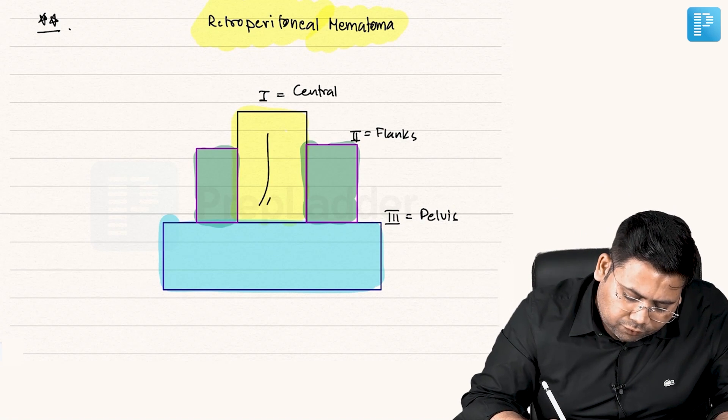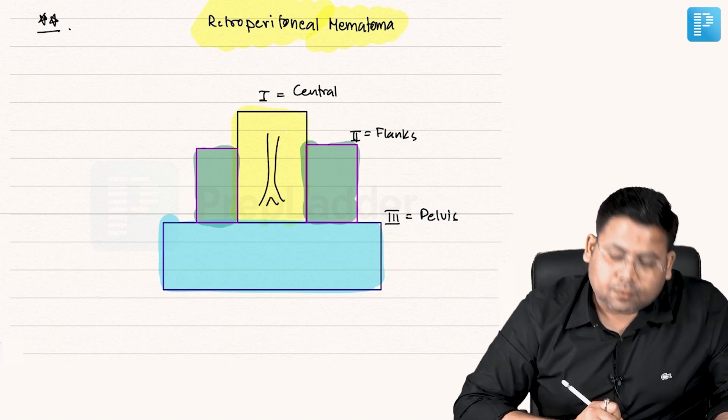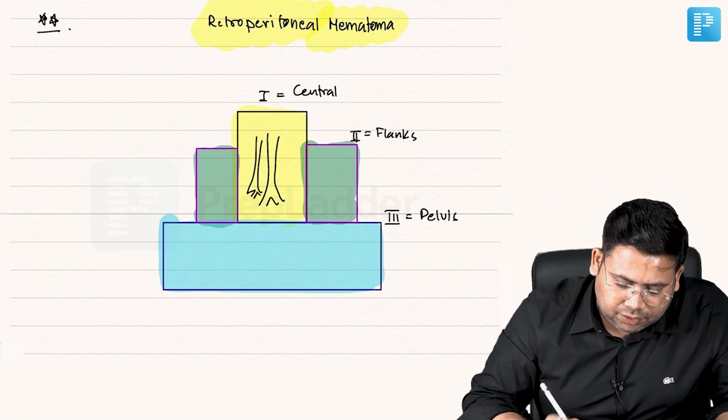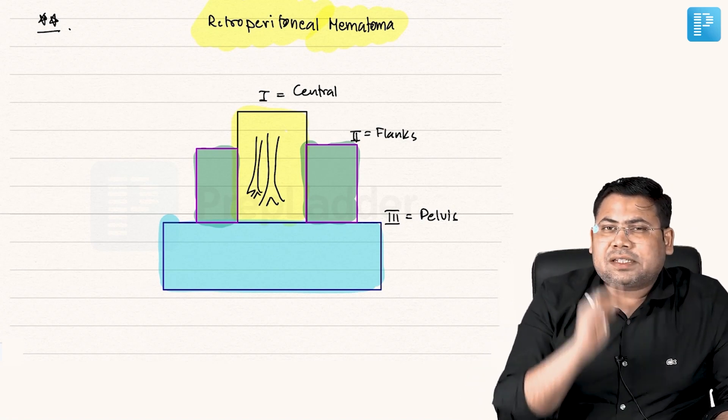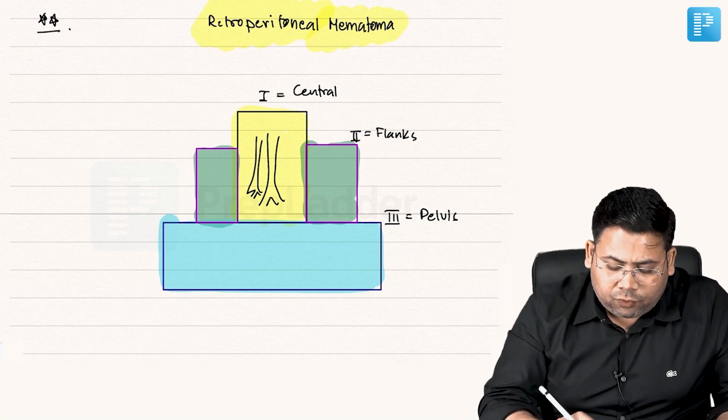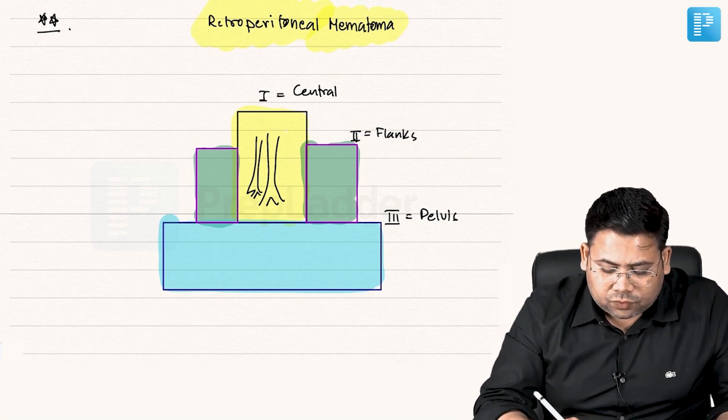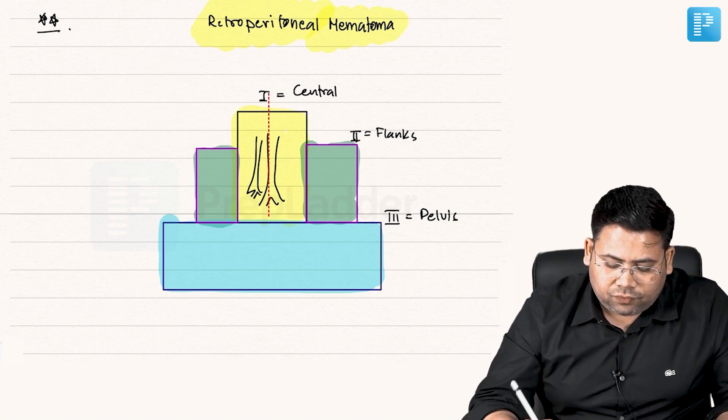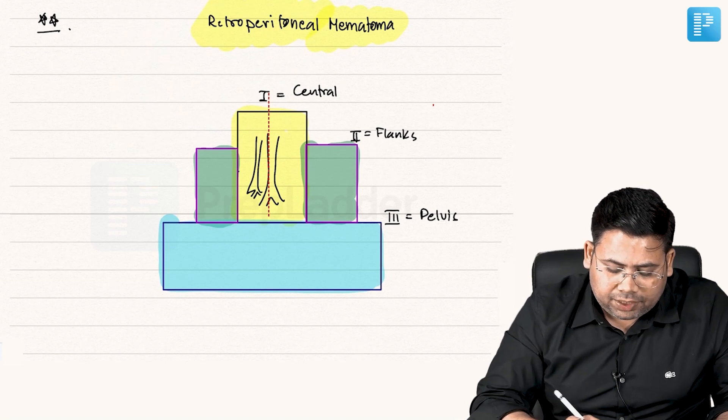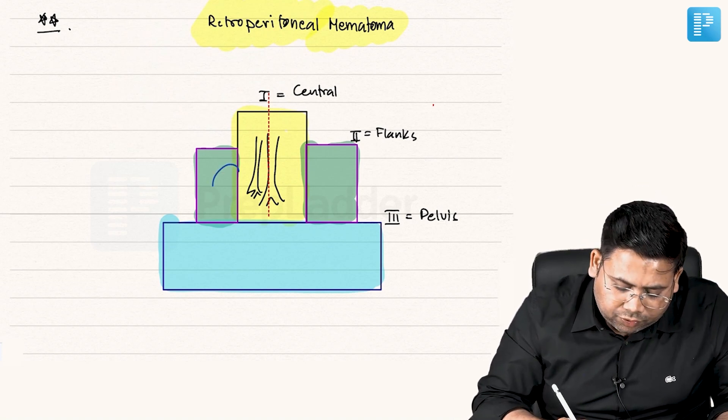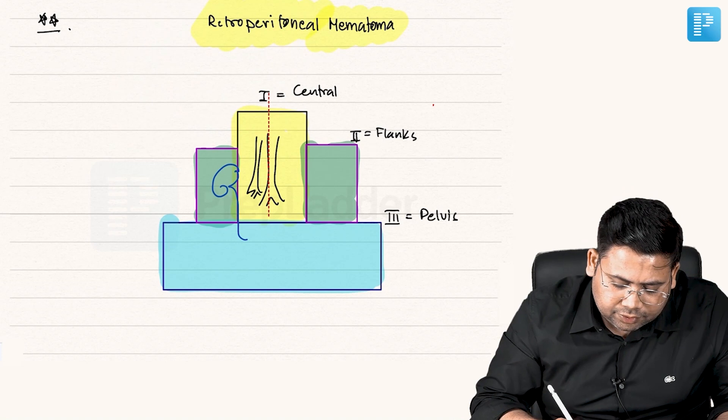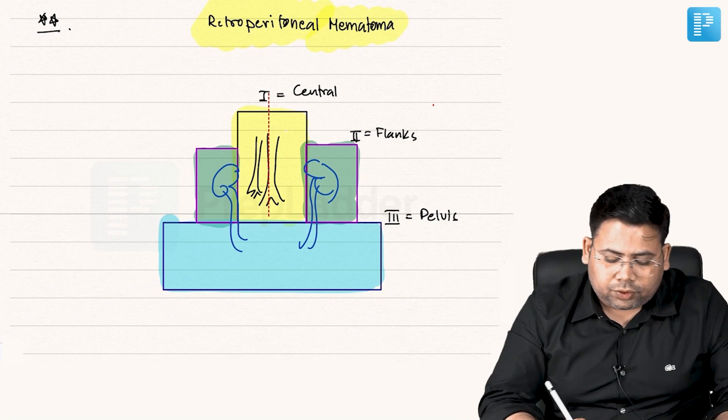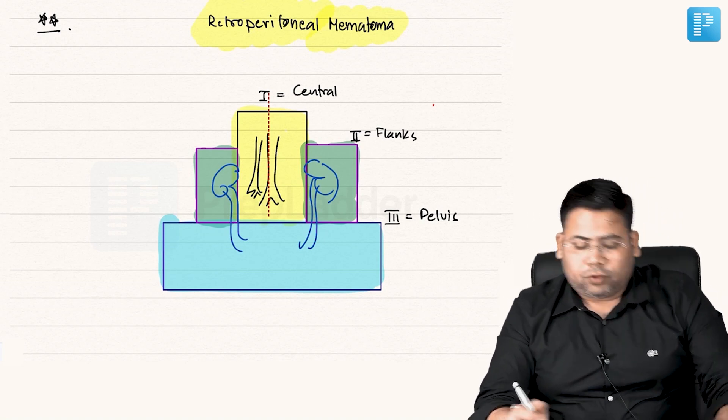Zone one, what is this? This is the aorta and this is the vena cava. Remember, the great vessels are present in zone one. And if you ask me, what is the extent of zone one? The zone one extends from midline up to the medial border of kidney and ureter.